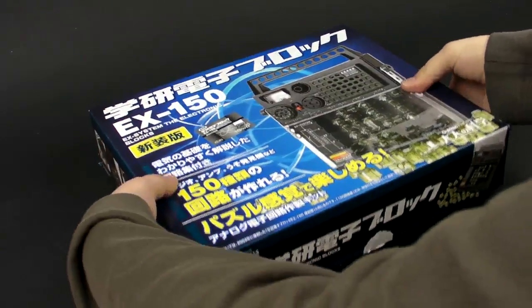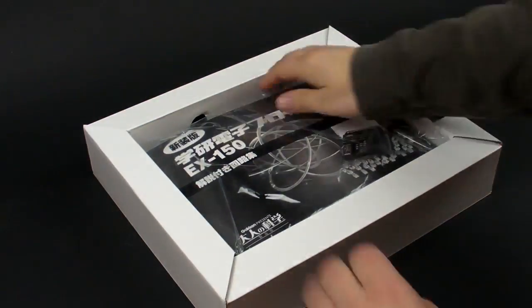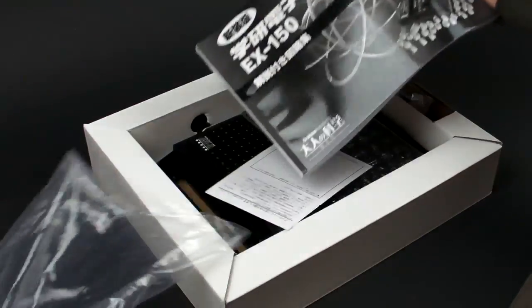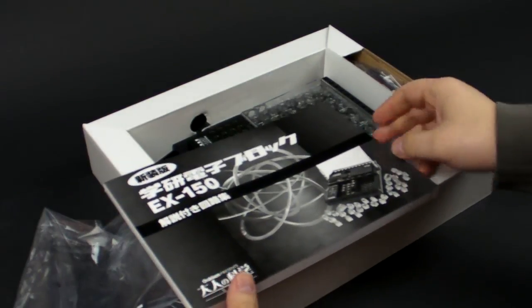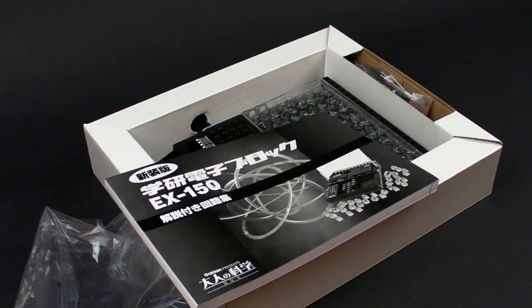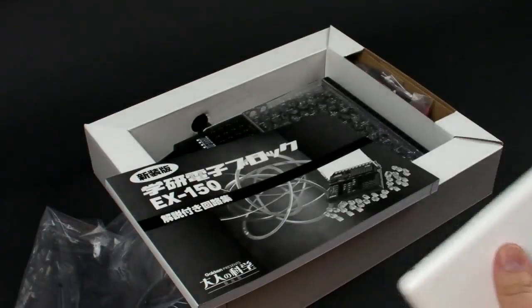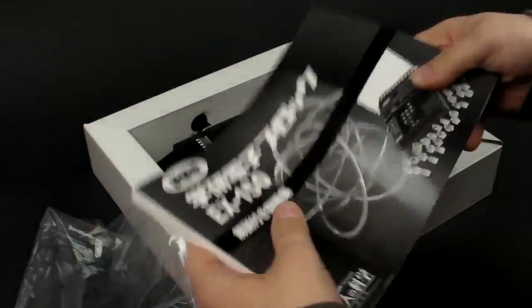So let's take a look at the EX150 made by Gakin. Here's the instruction manual. Once again, the Gakin kits, a lot of them are in Japanese. This is one of the cases where you really need the English translation. Luckily you can break out your computer and download them. They're available in the Maker Shed, there's a PDF link, and it's a really nice translation of the original Japanese manual, so don't worry about that.